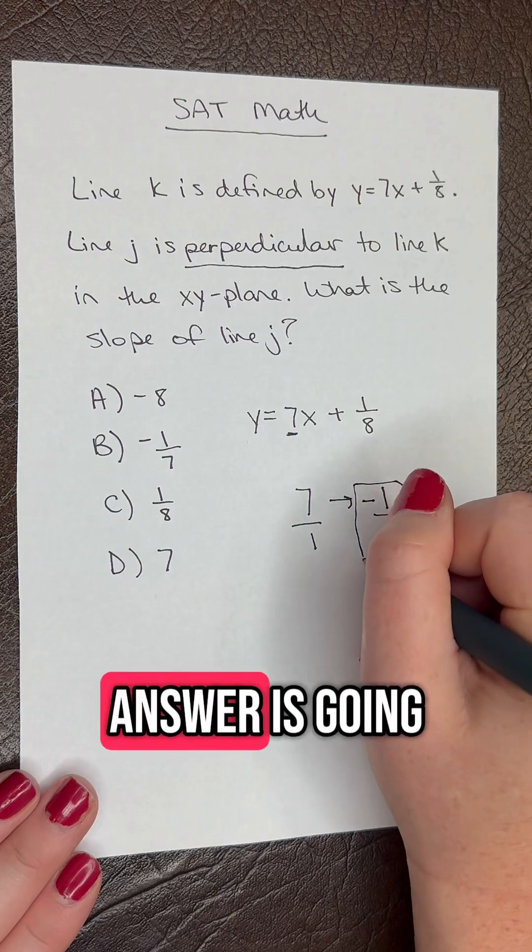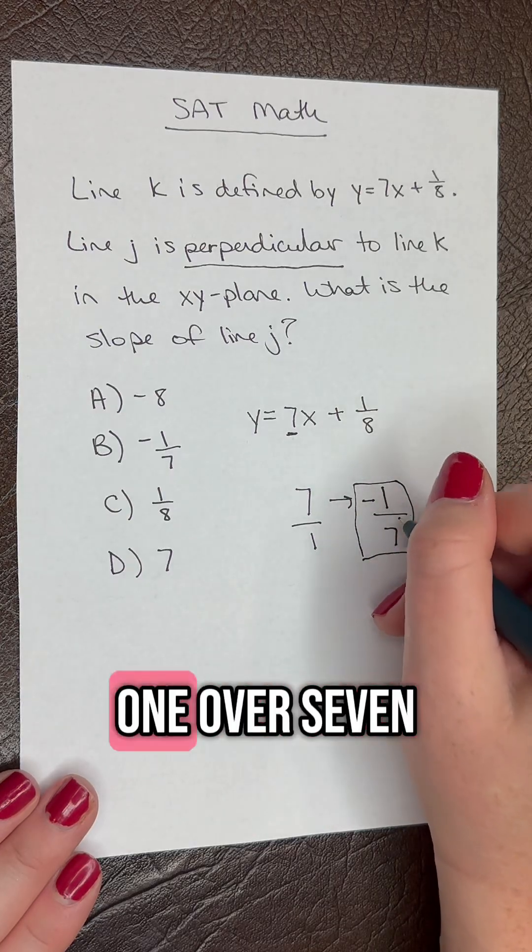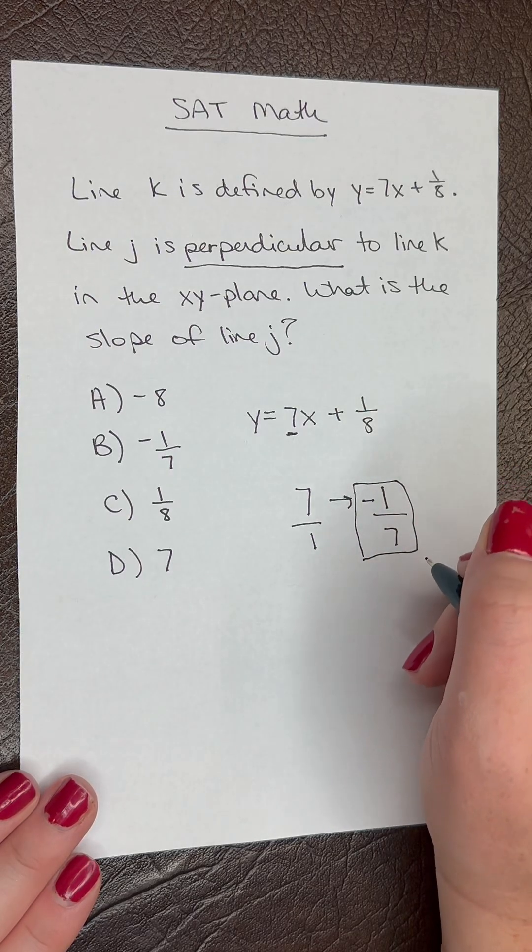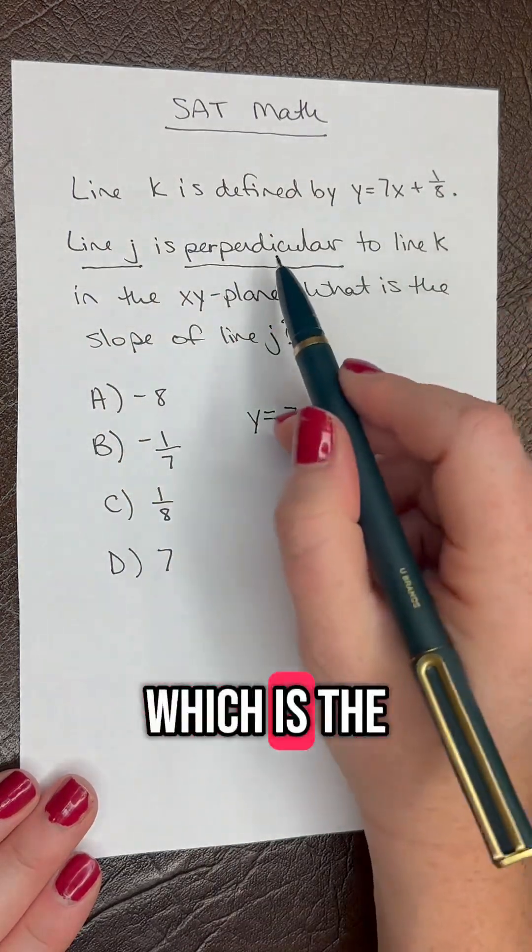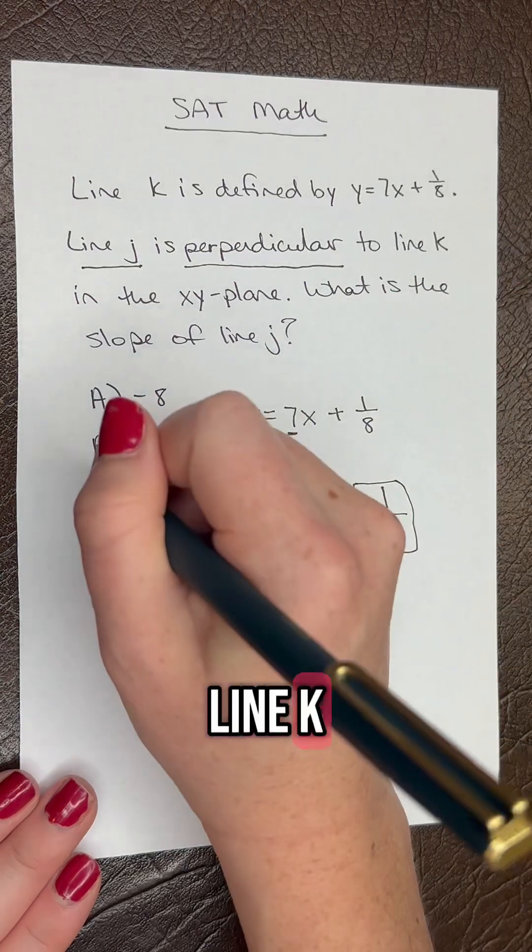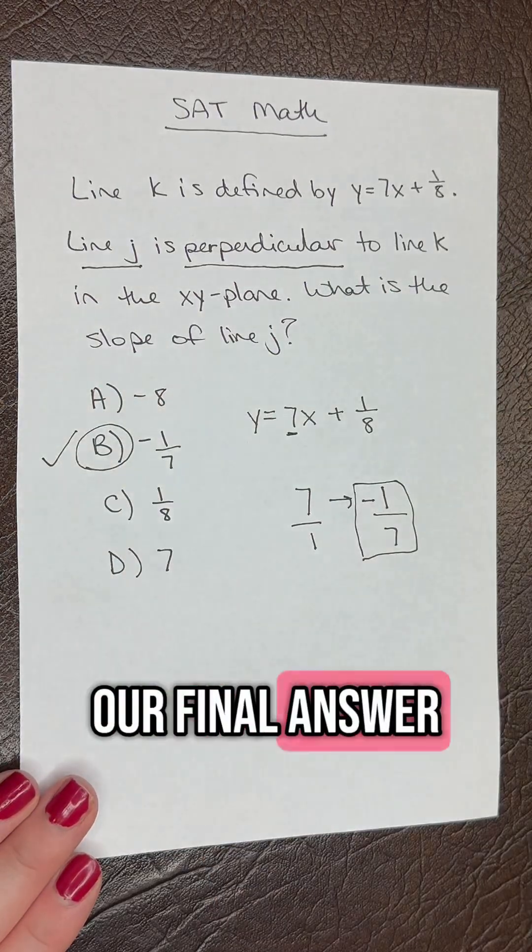So our final answer is going to be negative 1 over 7 because that would be the slope of line j, which is the perpendicular line to line k. So B is going to be our final answer.